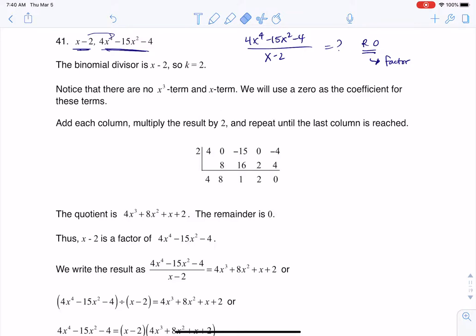So if x minus 2 is the binomial or is the divisor, I'm going to let my k be 2. One thing I do want to point out, you can see that the powers skip. There's no x cubed term, and then there's no x term. And that's important to keep track of. So that's why I have here a mention of there's no x cubed term and no x term,